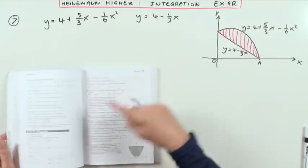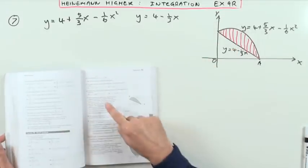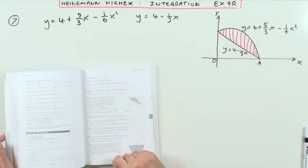What's the area contained between the two curves? Heinemann Heyer, chapter 9 on integration, the mixed questions, exercise 9R at the end, number 7, a former Heyer question.